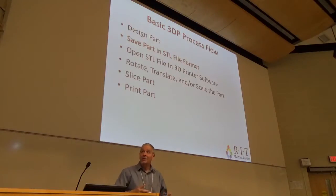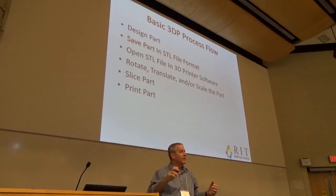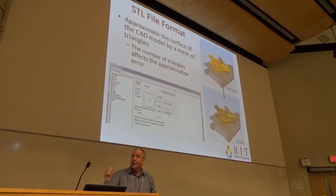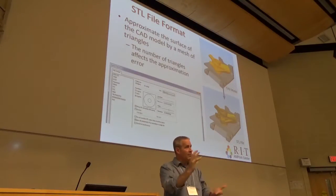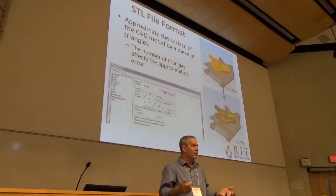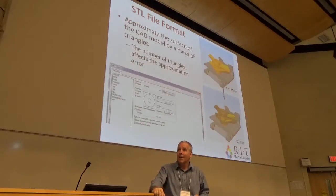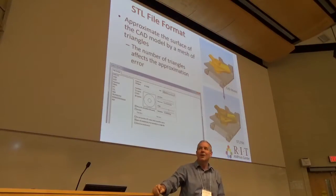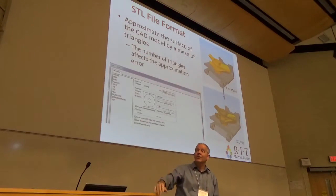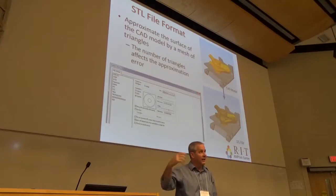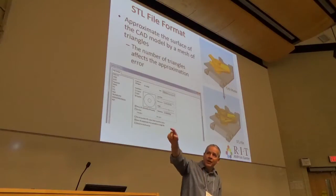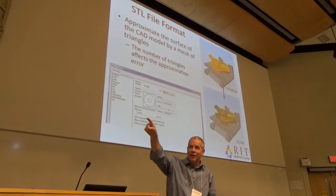Once you've got the basic design, you save it in the STL file format — that's the format almost all 3D printers use. The STL file format takes any computer model of a 3D part and approximates its surface with a whole bunch of triangles. In the top image you see a bicycle part coming out of CAD software; in the lower image you see that same surface covered with triangles. In the lower left, you can see that a circular feature is approximated as a polygon — an approximation of a circle.